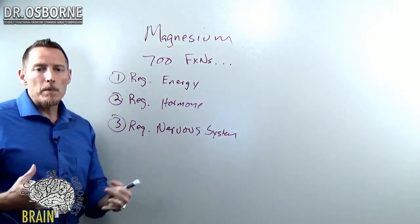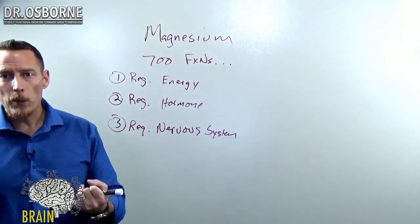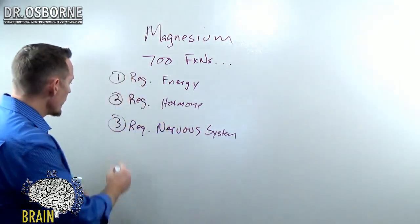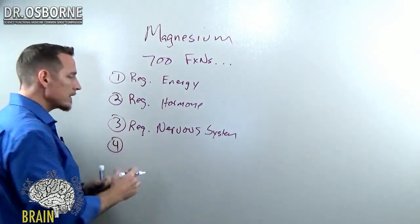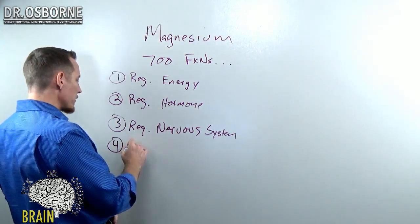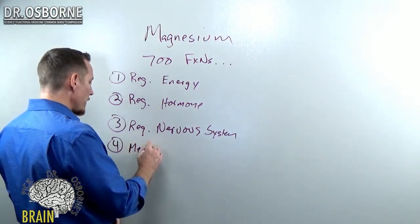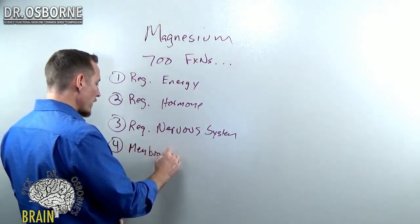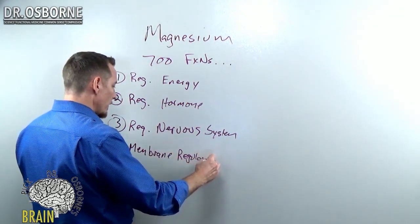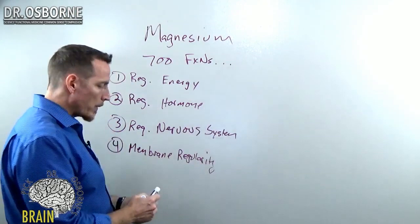Now you also need magnesium for cell membrane production. Your cell membranes, the covers around your cells that keep your cells' inside content separate from the outside content, you need magnesium for that. So membrane regularity, very important as a function for magnesium.